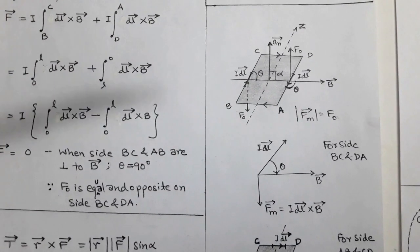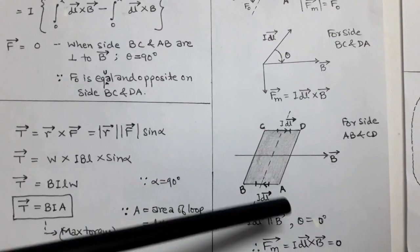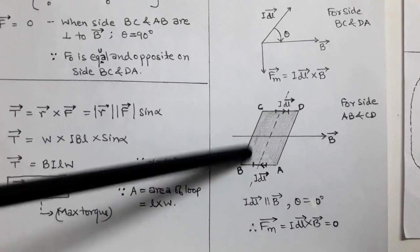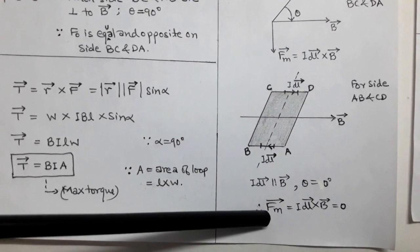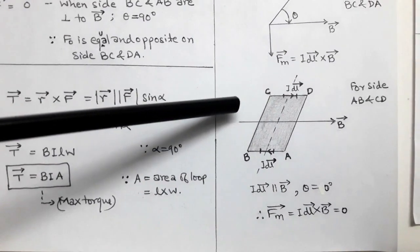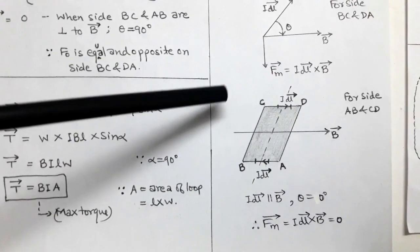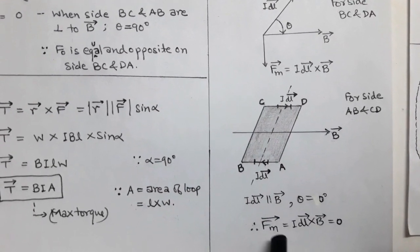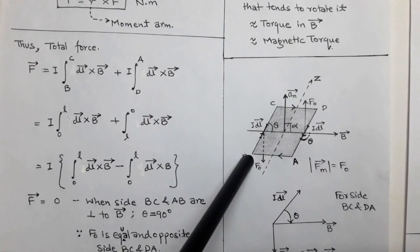Similarly, we take sides AB and CD and consider a current element dl vector. For the AB side, the current is flowing from A to B, so the dl vector direction is from A to B. But this dl vector makes an angle of 0 with respect to B vector. So the magnetic force on side AB is 0, because sin 0 is 0 when we take the cross product of dl cross B vector. Similarly for side CD, the current is flowing from C to D and its current element dl vector makes angle 0 with respect to B, so there is no magnetic force. We conclude that on sides AB and CD there is no magnetic force, but there is a magnetic force on BC and DA sides that is equal and opposite.